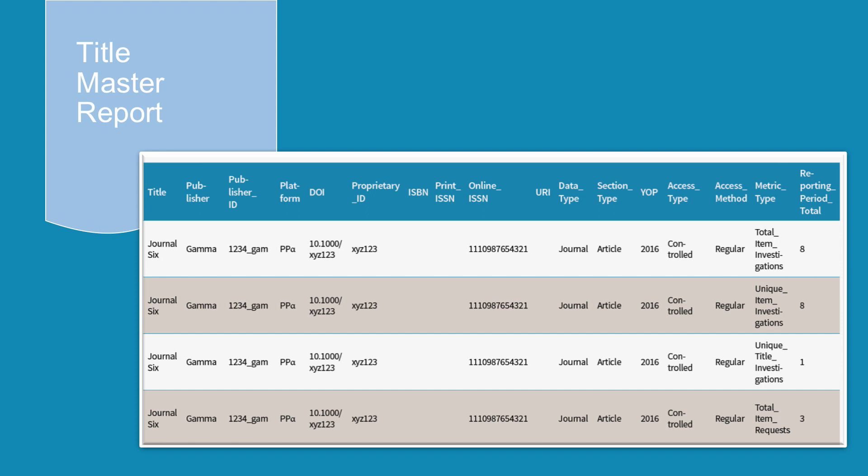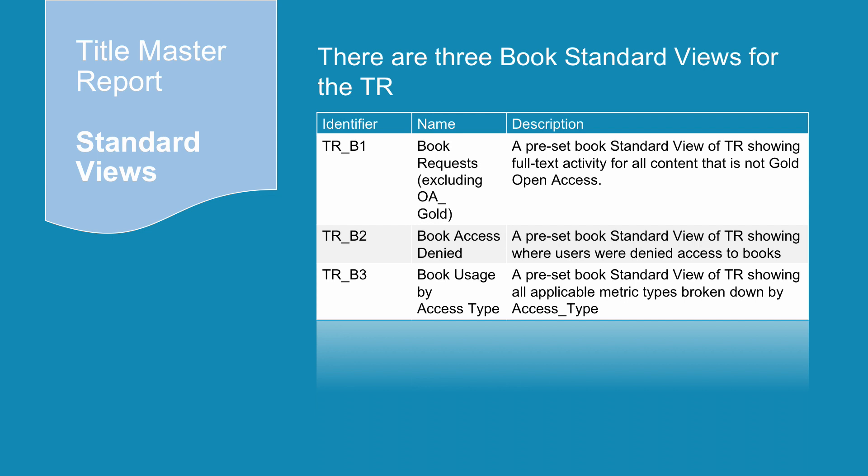Here is an example of part of a Title Master Report. We can see usage of Journal 6 published by Gamma: a total of 8 items have been investigated and 3 item requests have been made from this journal in the reporting period. A TR can be filtered according to user needs and has 7 standard views which apply to different host types. For example, an e-journal host does not need to provide TRB1, which relates only to books.